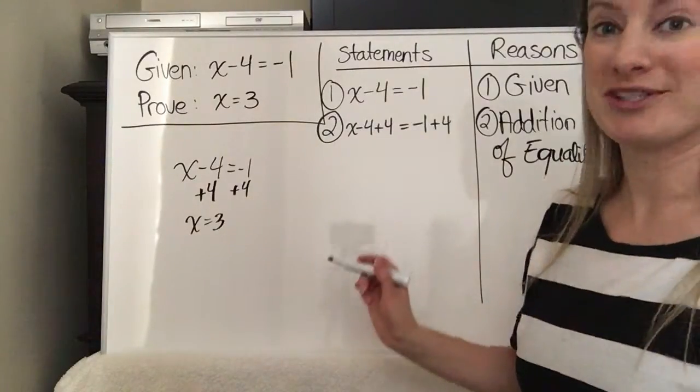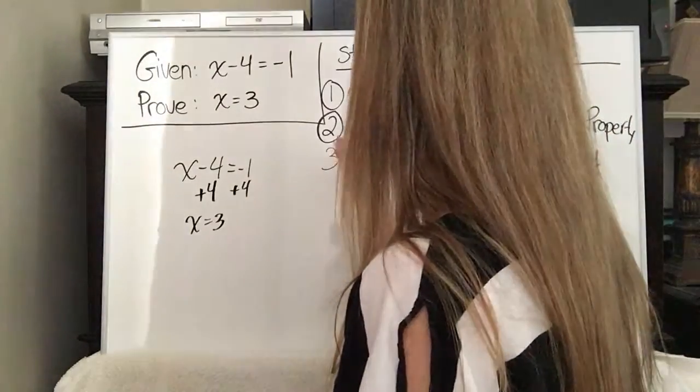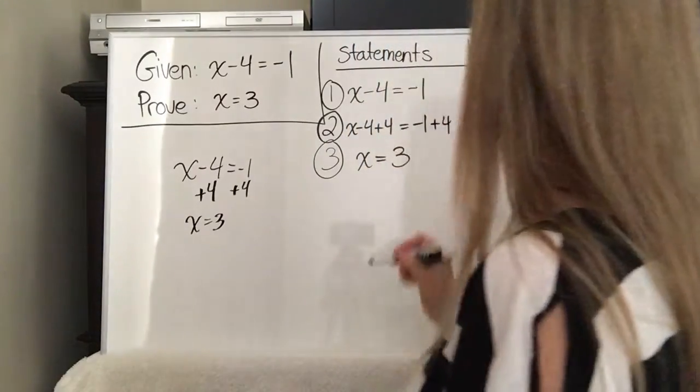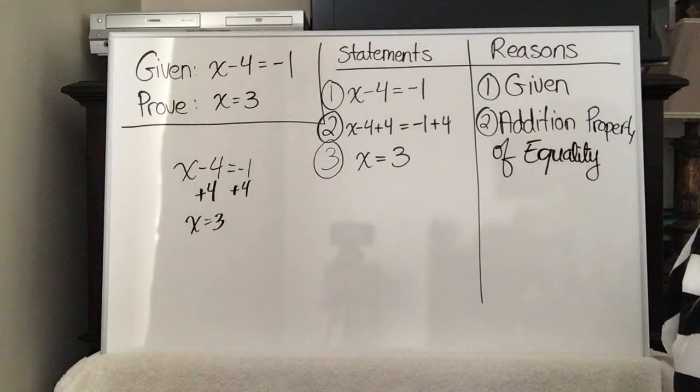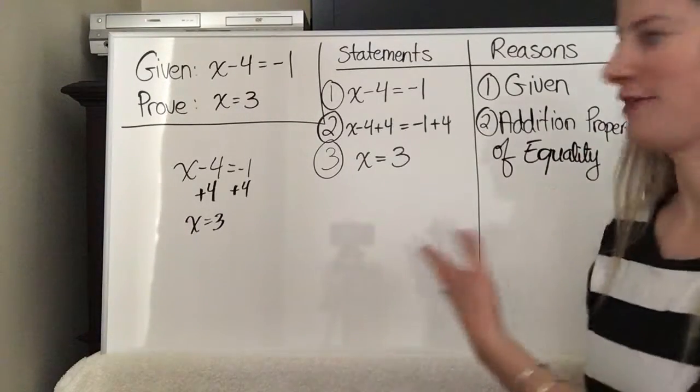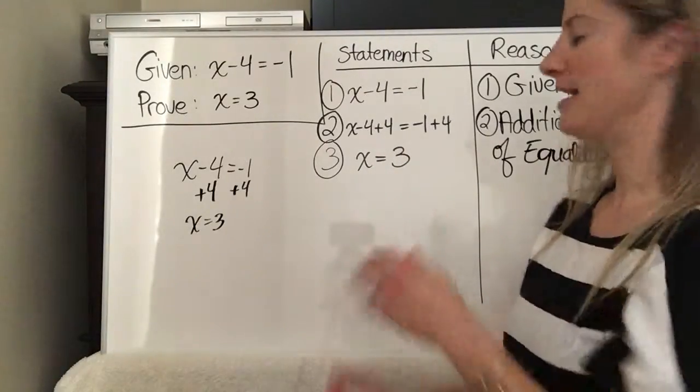Now, we only have one more step. x equals 3, okay? Now, you're probably wondering, well, what's the reason for that? I know that. That's the easy part, right? But what's the reason?